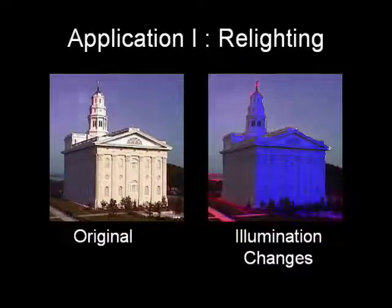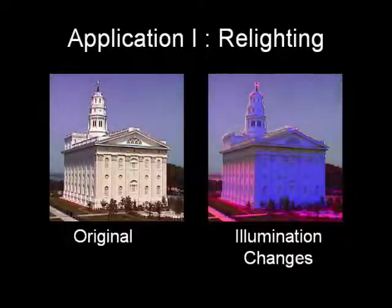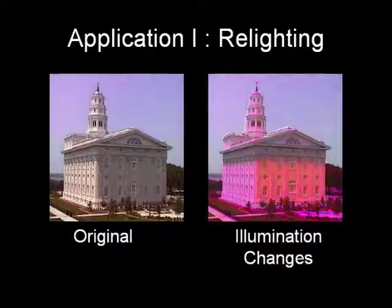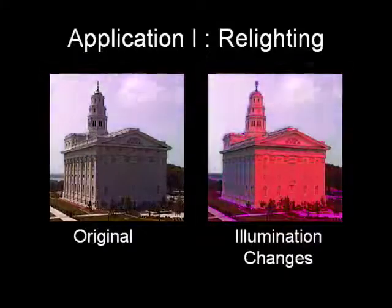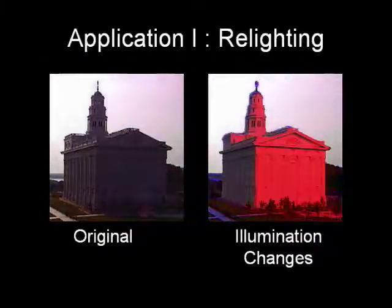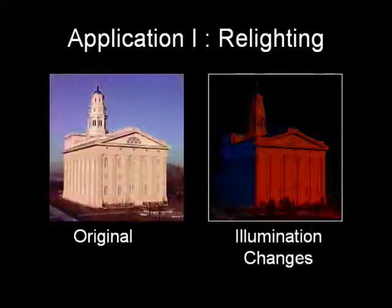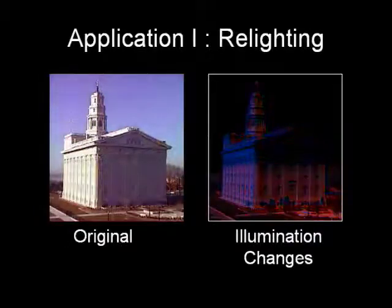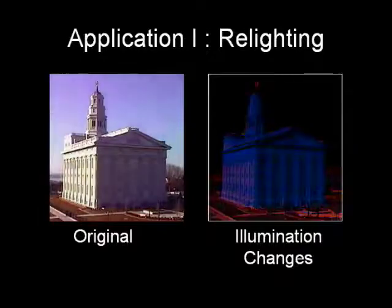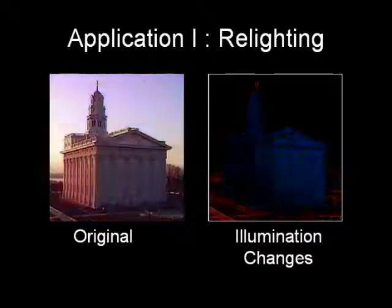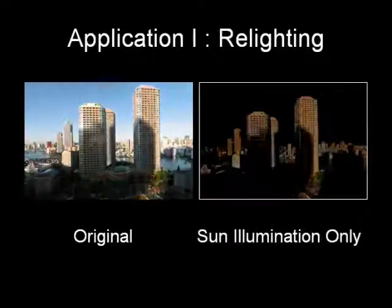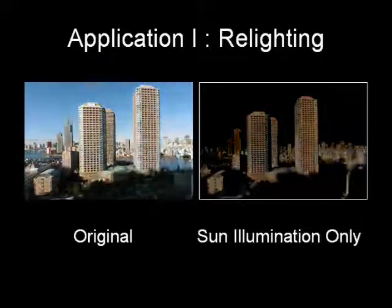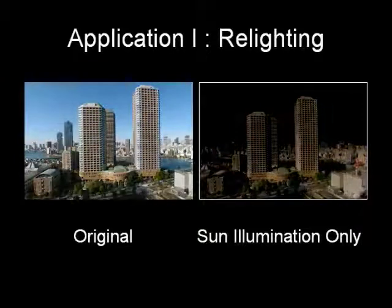FTLVs can be used for a wide variety of applications. Here we relight a sequence by changing the color of the sun at different time steps. We can also remove the skylight to make the effect more apparent. In this sequence, we remove the skylight and show how the scene would look with just illumination by the sun.